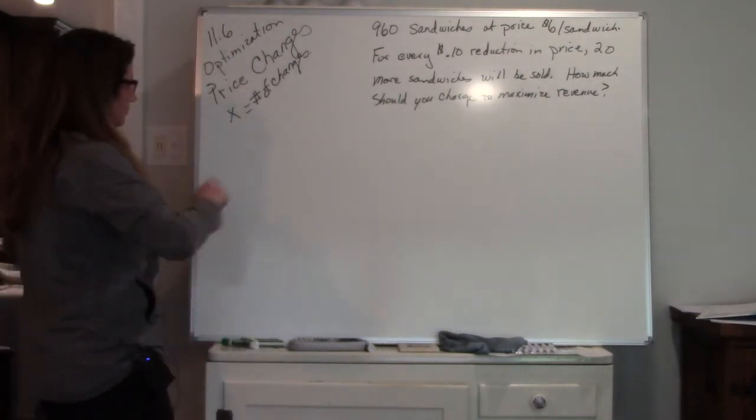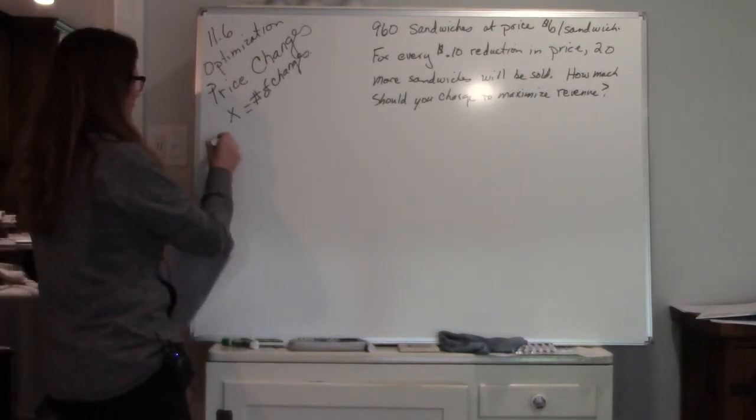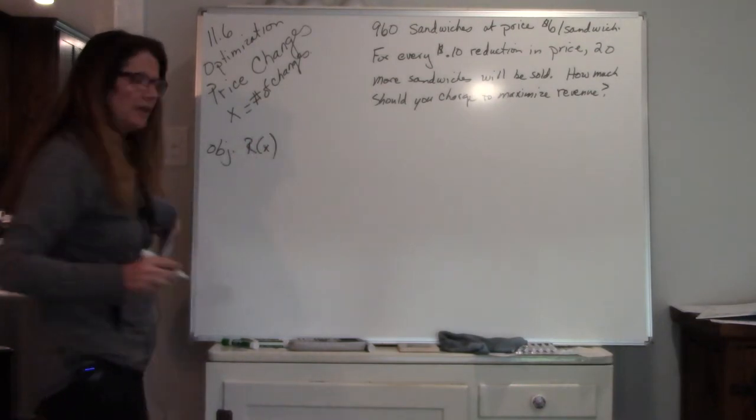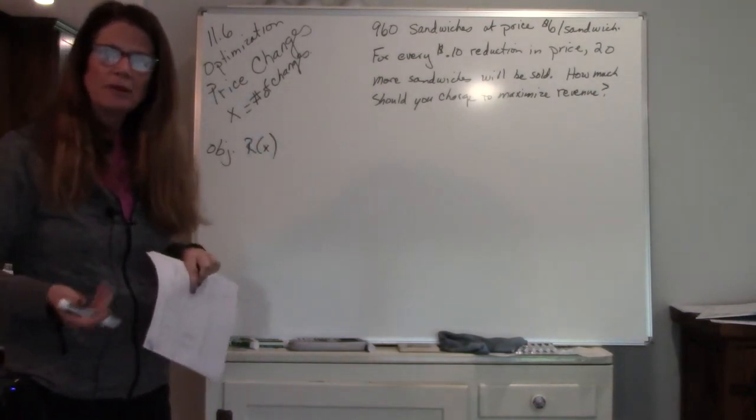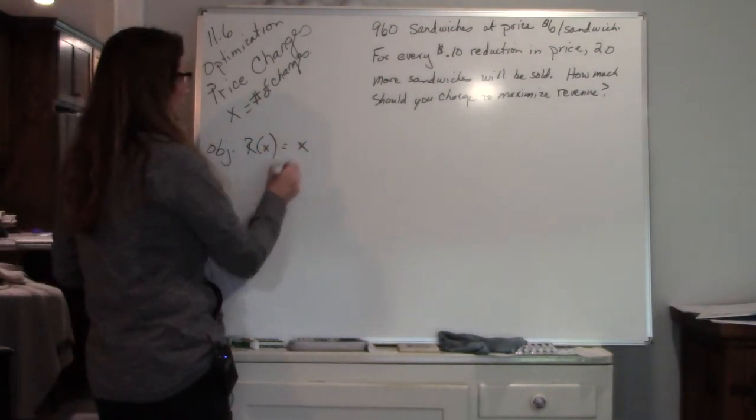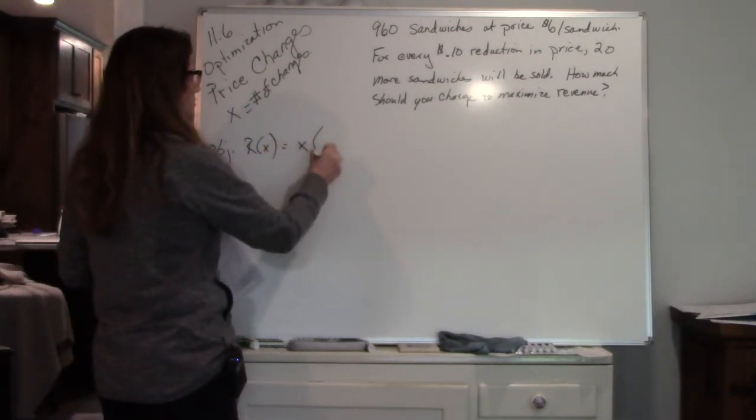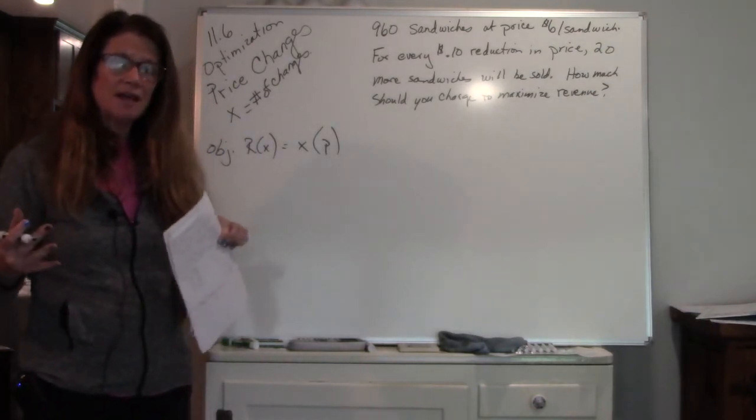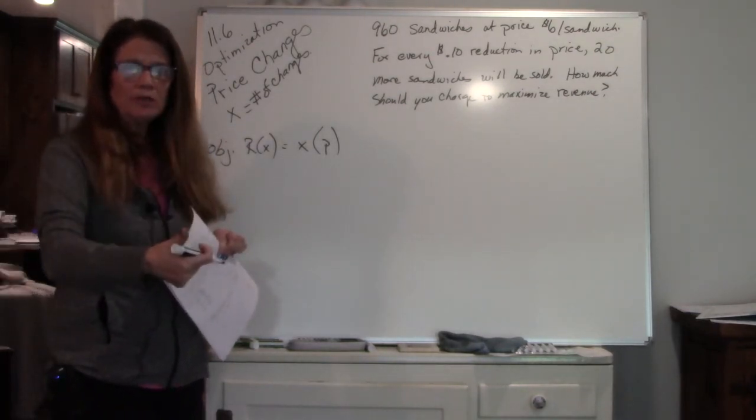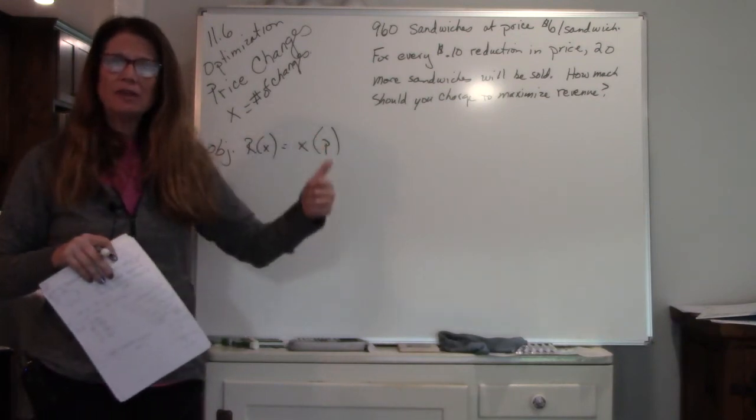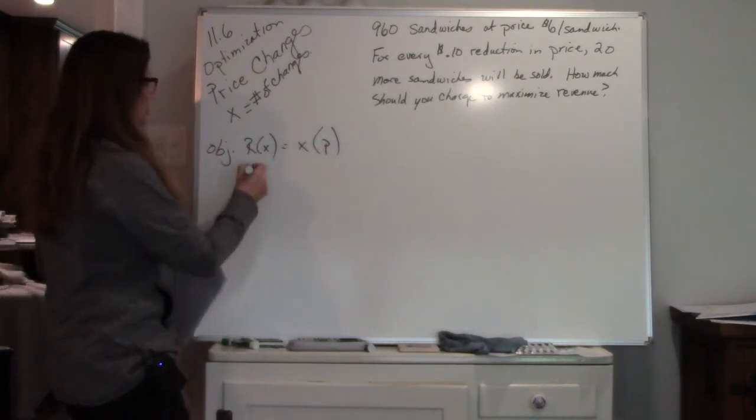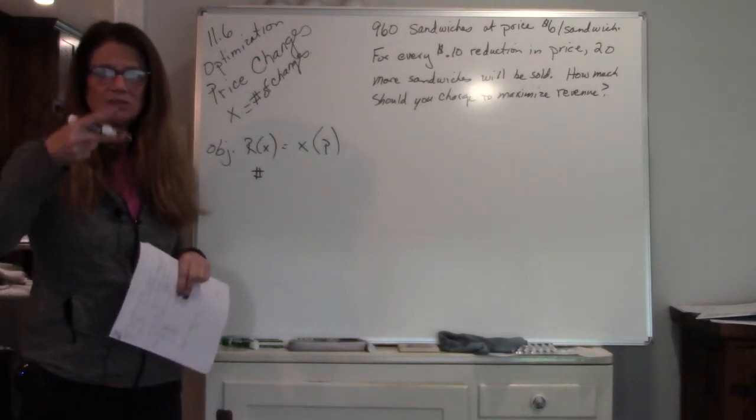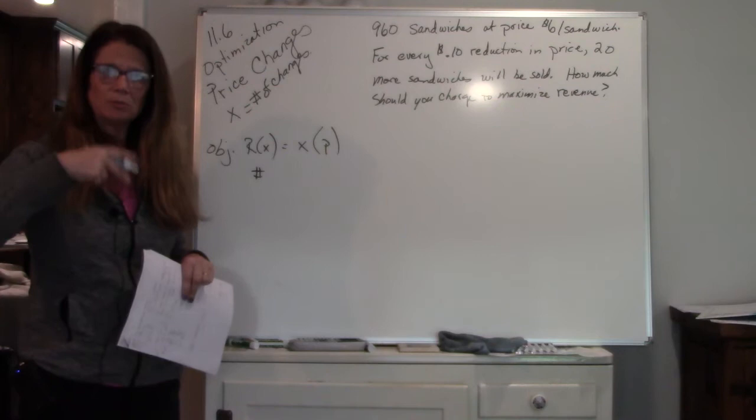So our objective is revenue. Now, how do you find revenue? Revenue is found by the number of items times the price of the item. So we have to set this up. We have to get our number equation, and we have to get our price equation. When you're setting a price change function up, you have two things that you have to find. You have to set up the number, and you have to set up the price.